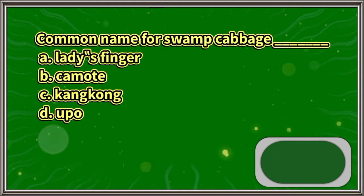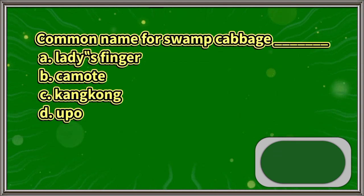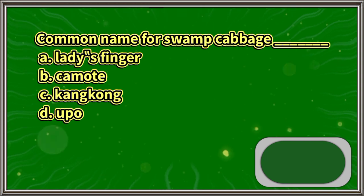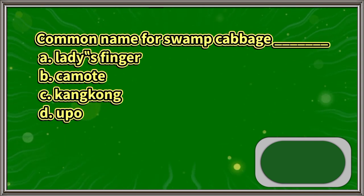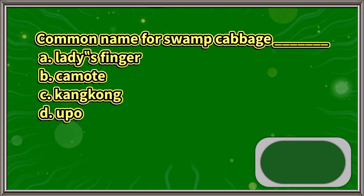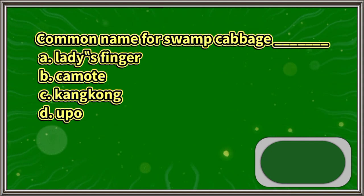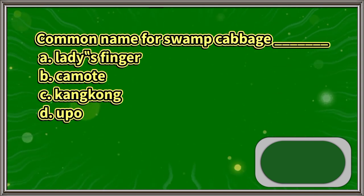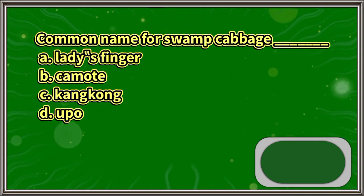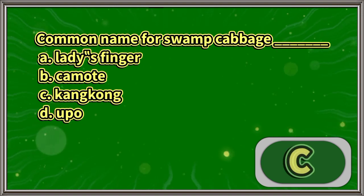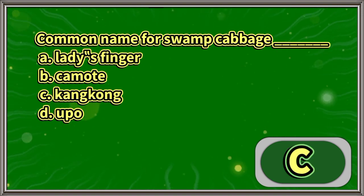Common name for swamp cabbage. A. Lady's finger. B. Kamote. C. Kangkong. D. Oppo. The answer is letter C.